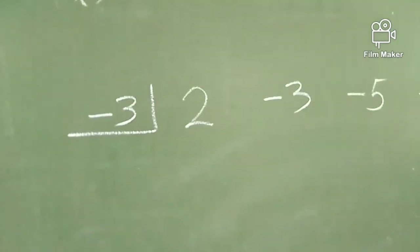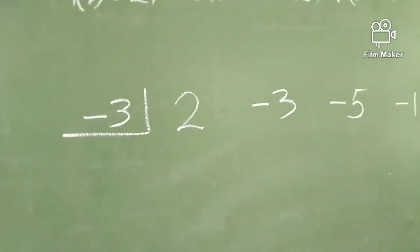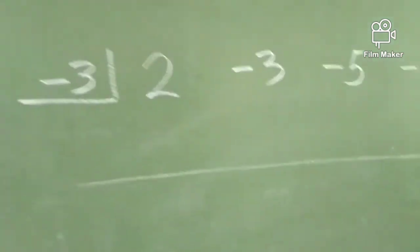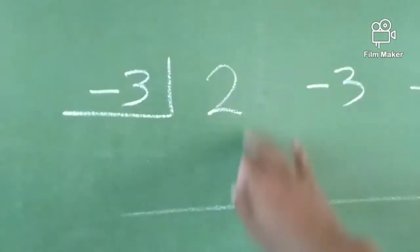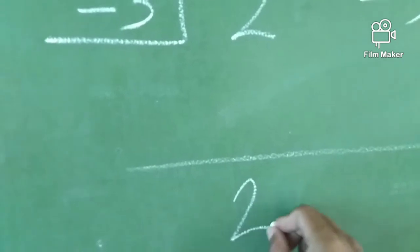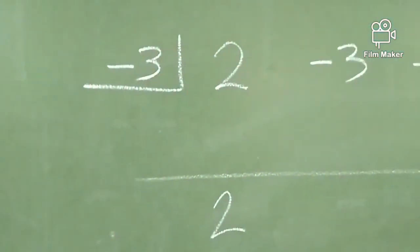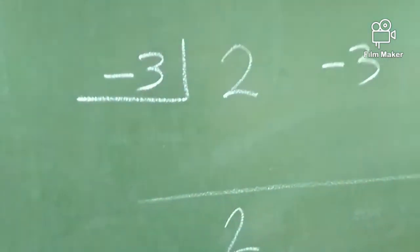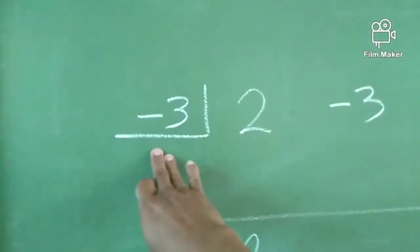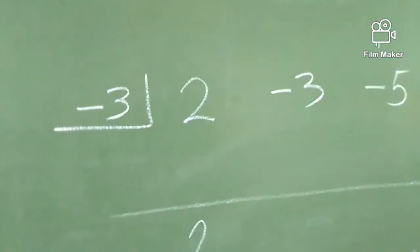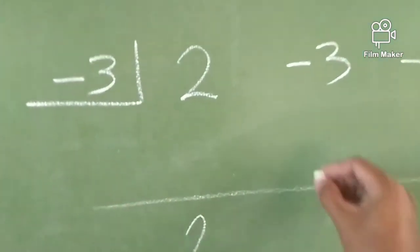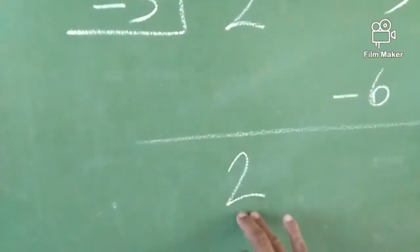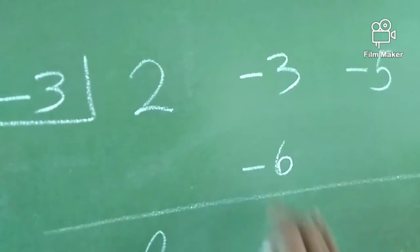Magdi-divide po tayo ngayon. Ito ang procedure. Sulat natin yung line. Then, bring down 2. Pagka-bring down natin yun, first is imultiply natin ito dito sa ating divisor. So, we have 2 times negative 3. Ilan ang sagot? It is negative 6. 2 times negative 3 is equal to negative 6.